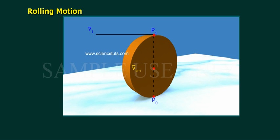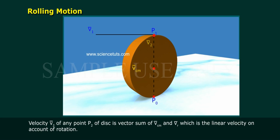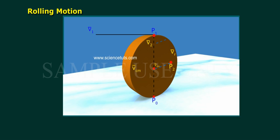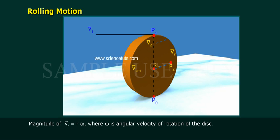Velocity V₂ of any point P₂ of disk is the vector sum of V_CM and V_R, which is the linear velocity on account of rotation. Magnitude of V_R is equal to rω, where ω is angular velocity of rotation of the disk.